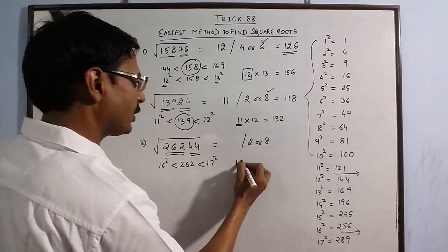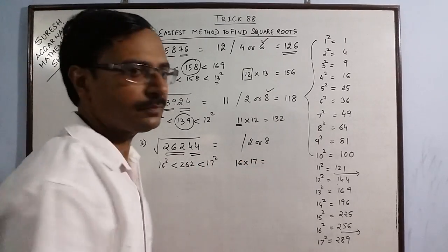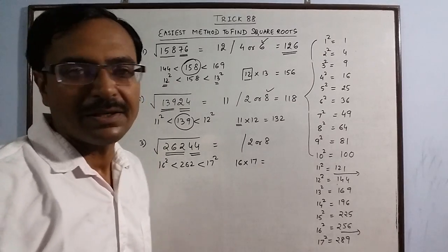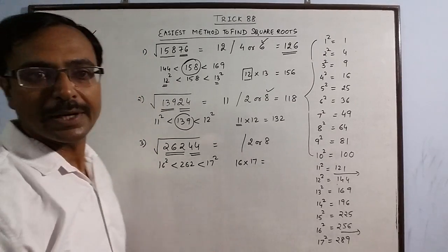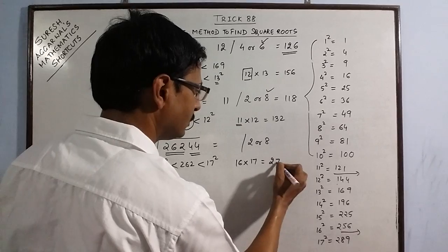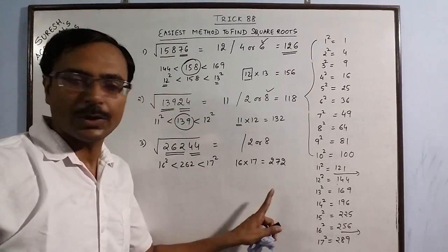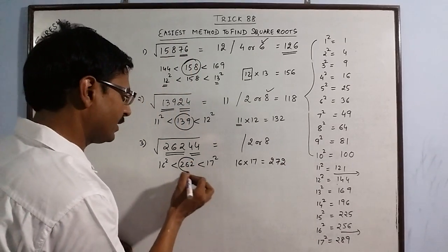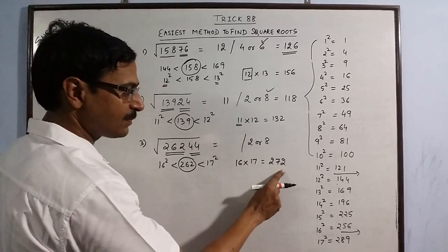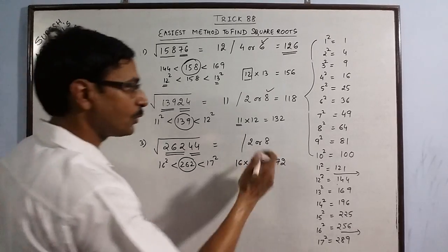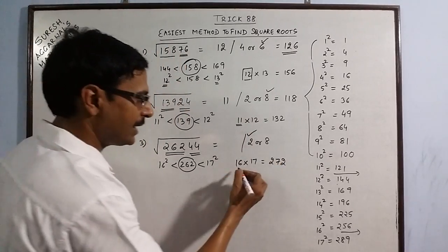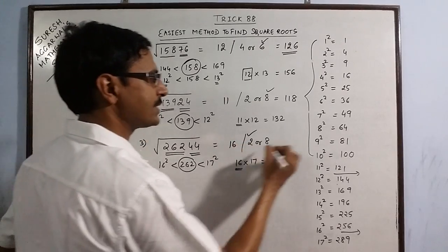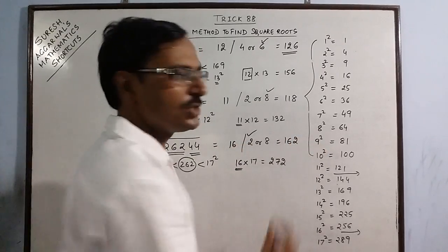Just take the product of 16 and 17. 16 and 17, the product is 272. So we will take the smaller number, and 16 here. So your answer is 162.